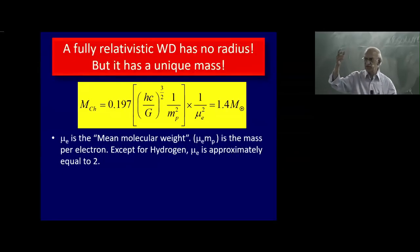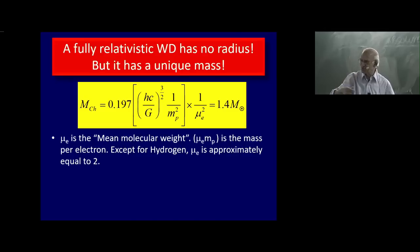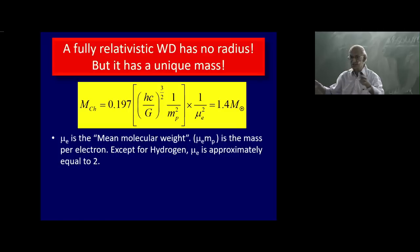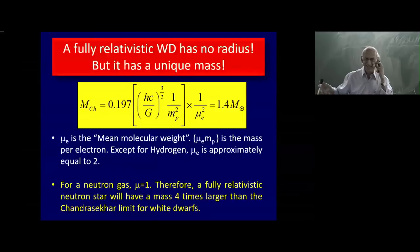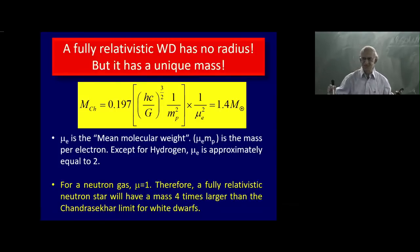If you have a helium nucleus, there are two electrons but four nucleons, so the mass per electron is two — μ_e equals two — and that is why the Chandrasekhar mass became 1.4 solar masses. But if you have only neutrons, then μ equals one. So the limiting mass of a neutron star will be just four times the Chandrasekhar mass.